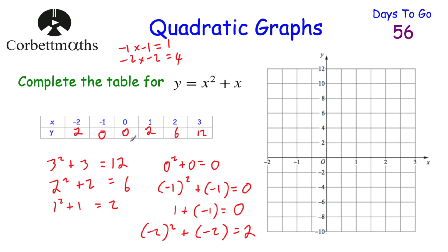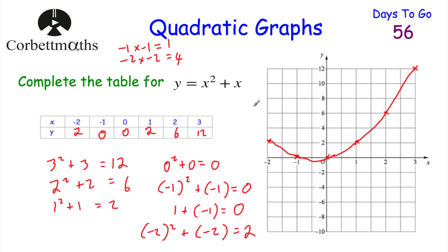Let's plot these points. 3, 12 — 3 across, 12 up. 2, 6 — 2 across, 6 up. 1, 2 — 1 across, 2 up. 0, 0 — the origin. Negative 1, 0. And negative 2, 2. Now let's draw our curve through those points — a nice smooth curve. This is our parabola.